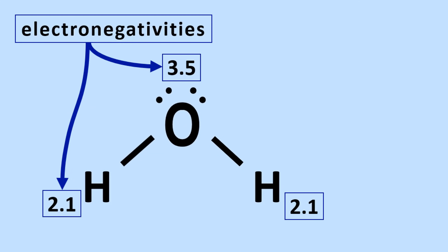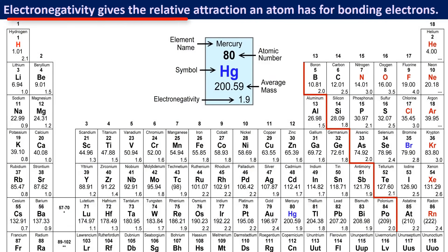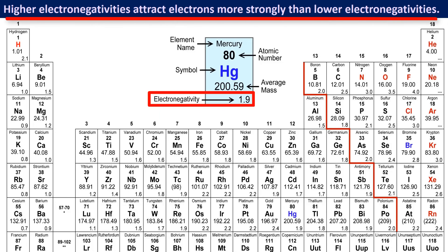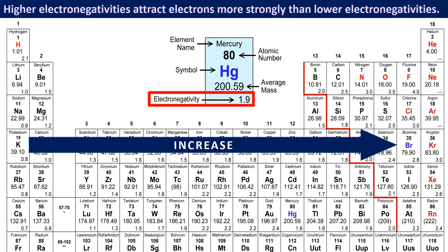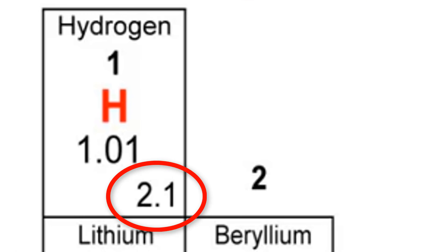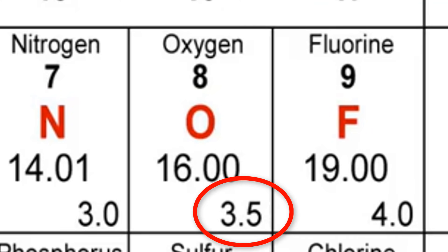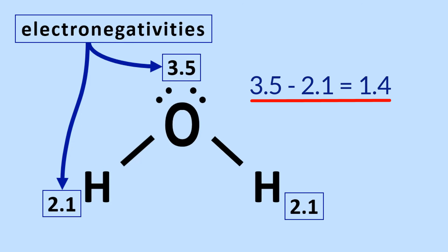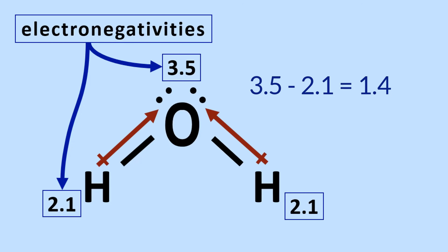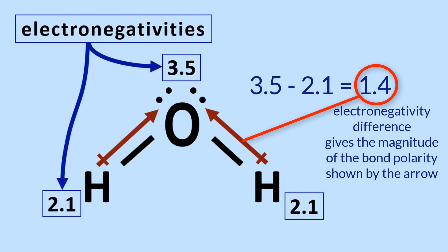Next, we look at bond polarity by the difference in bonded atoms' electronegativities. Electronegativity is a number that gives the relative attraction an atom has for bonding electrons. Higher electronegativities attract electrons more strongly than lower electronegativities. In general, electronegativity values increase across the periodic table from left to right and from bottom to top. Hydrogen has an electronegativity of 2.1 and oxygen has an electronegativity of 3.5. The difference between 3.5 and 2.1 is fairly large, meaning the hydrogen-oxygen bond has a large polarity, shown with an arrow pointing toward the more electronegative atom, oxygen. It is the electronegativity difference that gives the magnitude of the bond polarity, as shown by the length of the arrow.